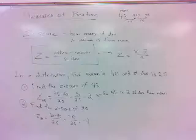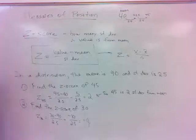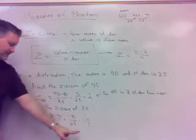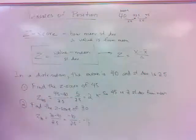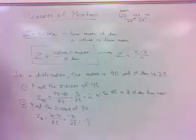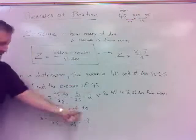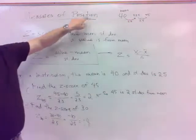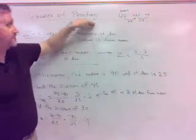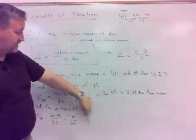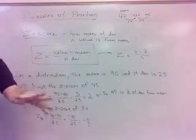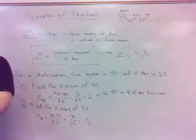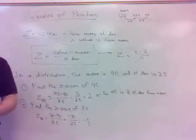Why is it negative? It's below the mean. The z-score of 30 is negative 4 because you're below the mean. Anytime your value is below the mean, the z-score will be negative.